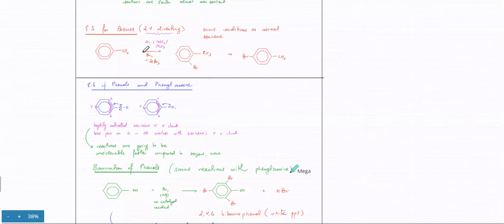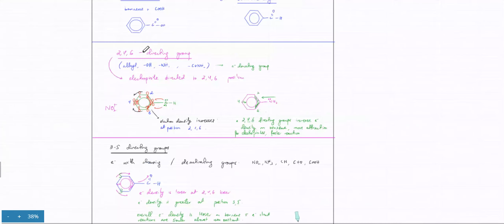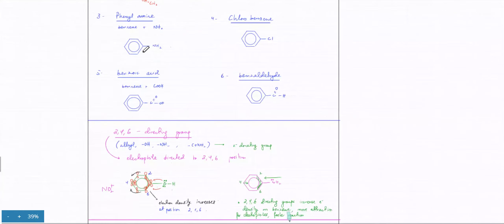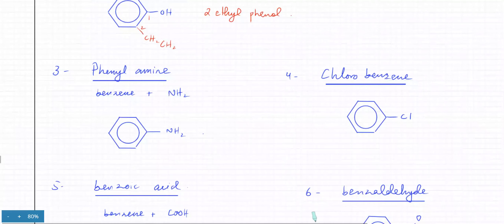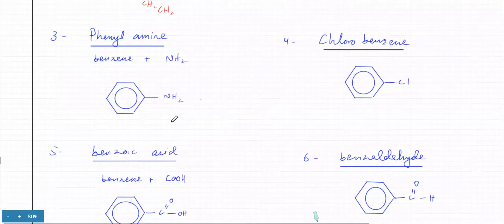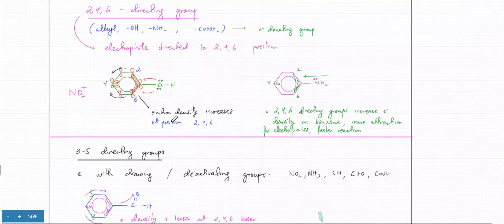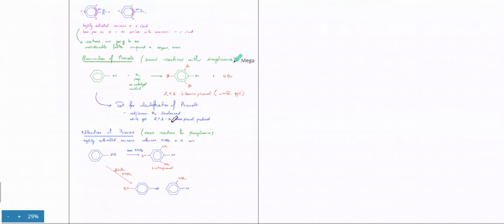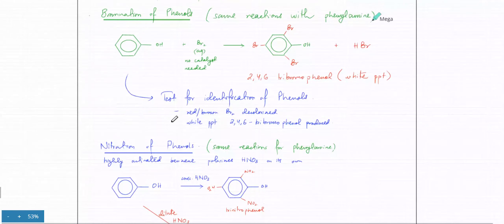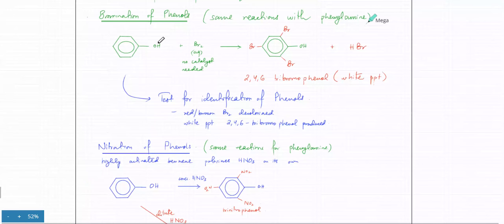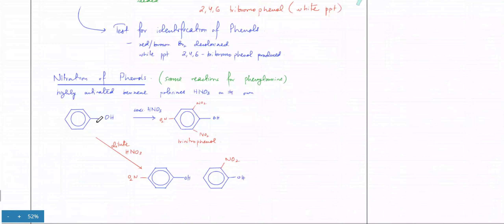Phenylamine had the NH2 group — it was the 2,4,6 directing group. Instead of OH, you have NH2. So exactly the same reactions apply: if you had NH2 instead of OH, you're going to get the same two types of products whether you use concentrated or dilute nitric acid.